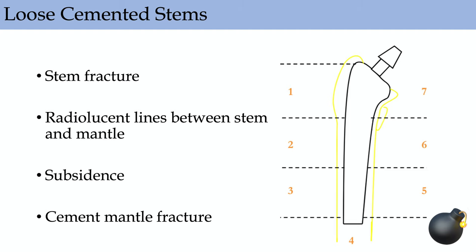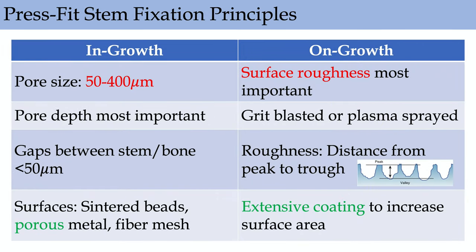For press-fit cementless stems, fixation is either ingrowth or ongrowth. For ingrowth, pore size should be about 50 to 400 micrometers and pore depth is most important. For ongrowth, surface roughness is most important — these are grit-blasted or plasma-sprayed stems. The roughness is the distance from peak to trough of the pits. Just know there are two types of press-fit principles: ingrowth and ongrowth, and the pore size and surface roughness parameters.